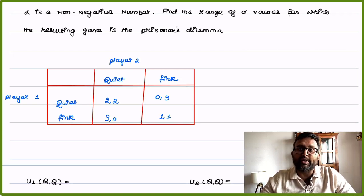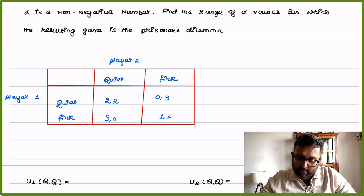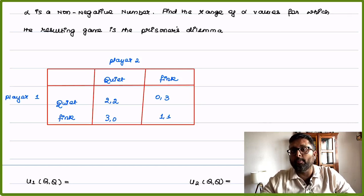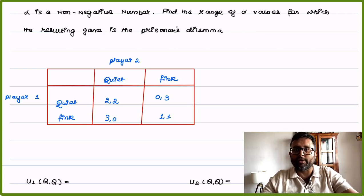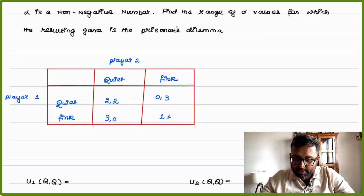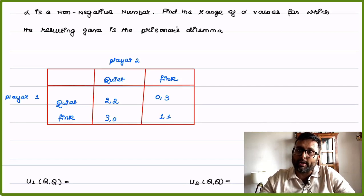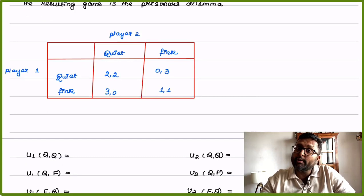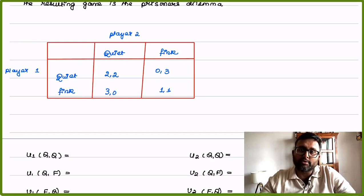If both fink, our utility is 1-1. If I remain quiet and you fink, my utility is 0 because I am thrown into jail, and your utility is 3 since you are set free. Similarly, if I fink and you remain quiet — you didn't help the police — your utility is 0, and since I became the informer, my utility is 3.